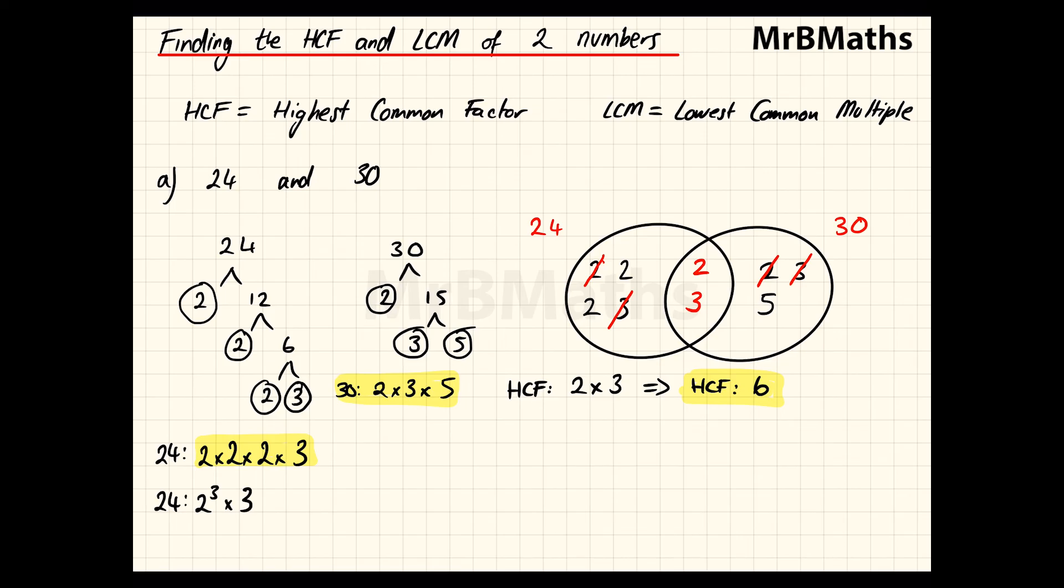To find the LCM, multiply every number that's not crossed out. I'll go from left to right: 2 × 2 from the left circle, then the center 2 × 3, then the 5 from the right circle. I'll multiply all of these together step by step to get the LCM.